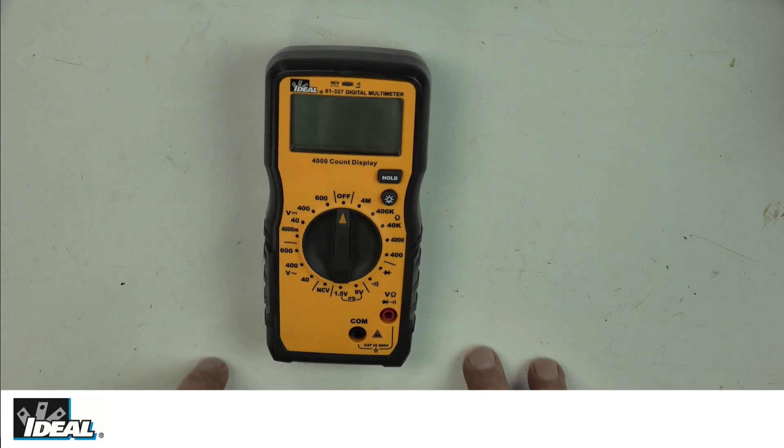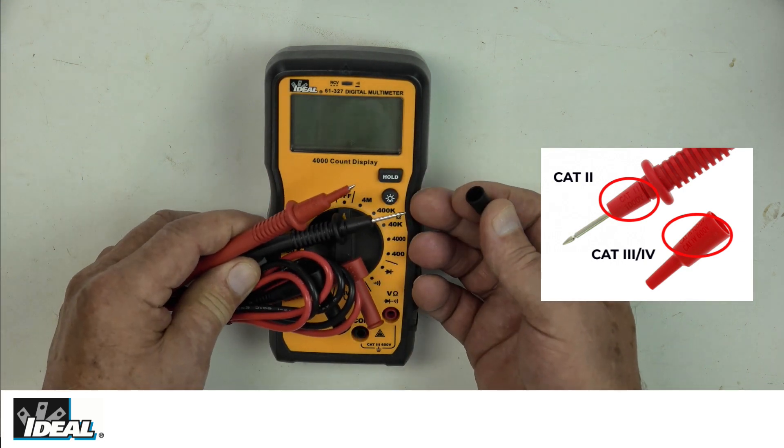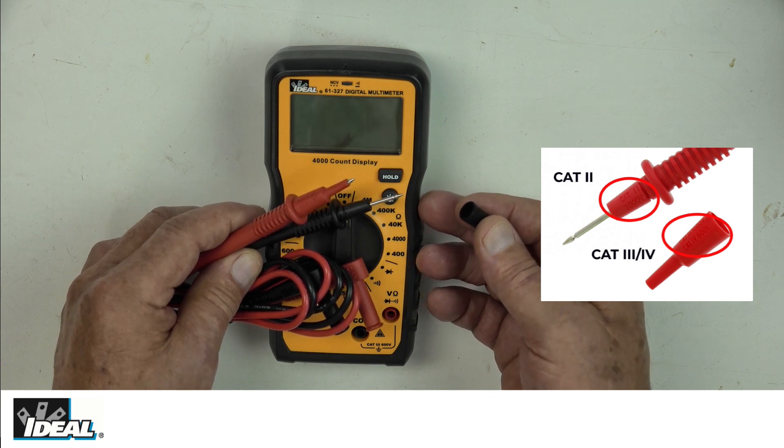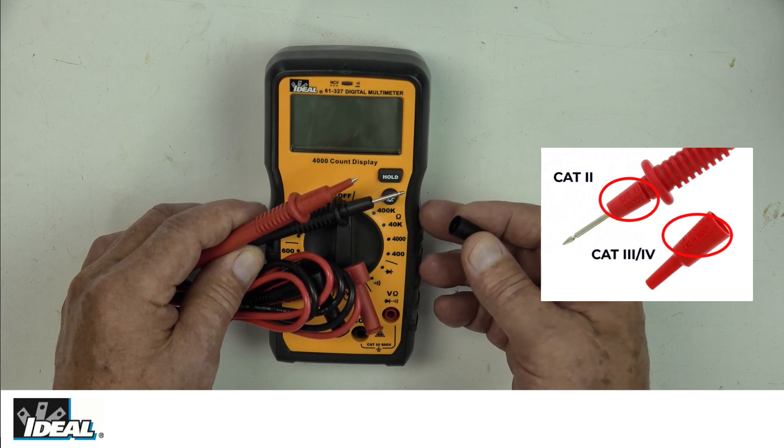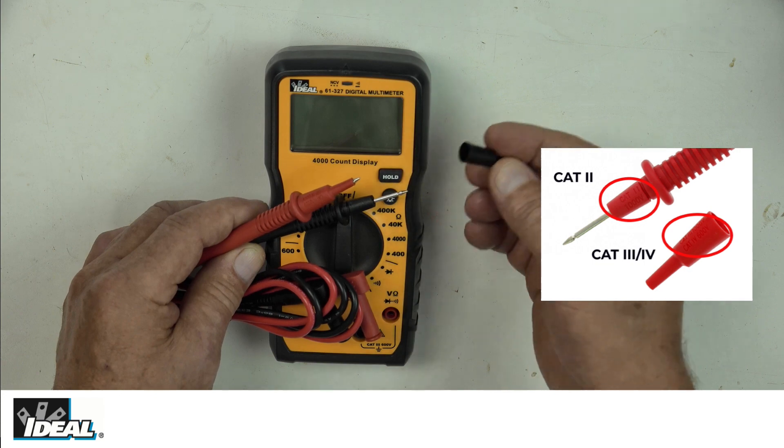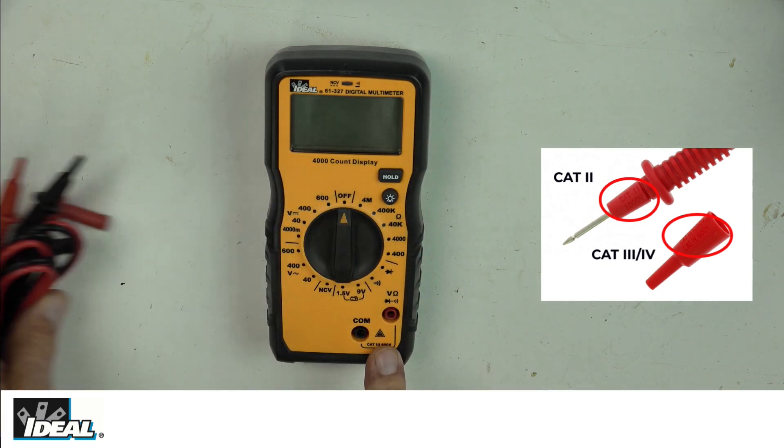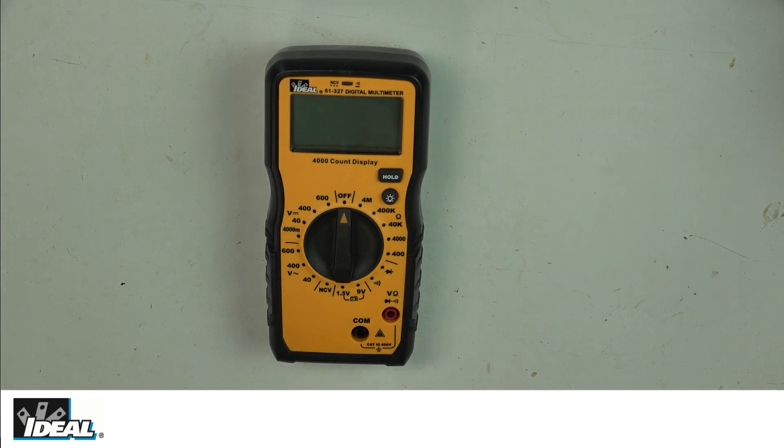The test leads that come with the tester have removable caps. If I'm using the tester in a Cat 2 testing environment, say at an outlet in a room, it's okay to remove them. But always hang on to these caps and replace them because if you use the tester in a Cat 3 testing environment, say at an electrical panel, you would need those protective caps.